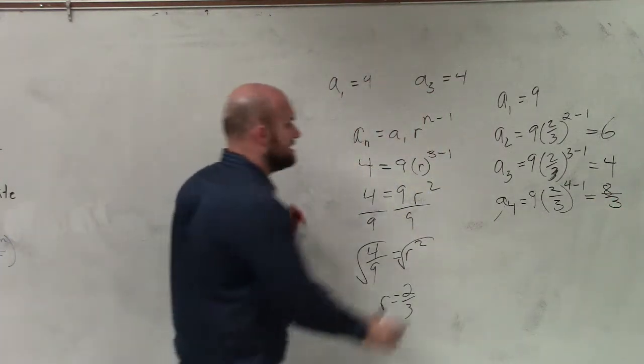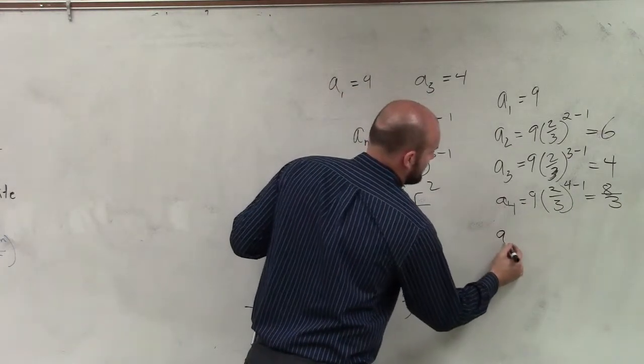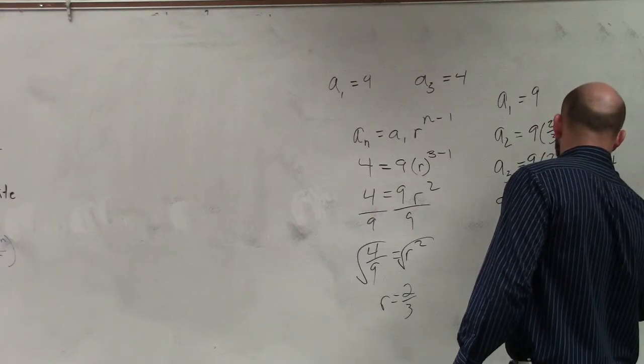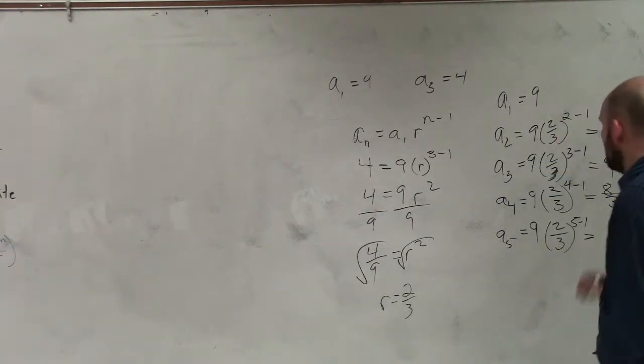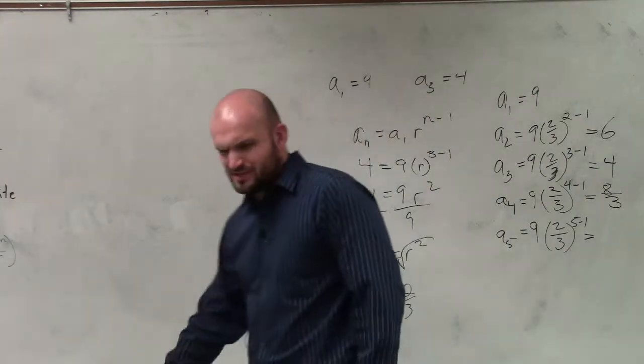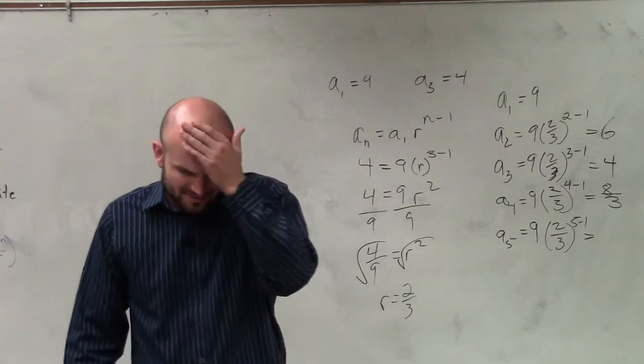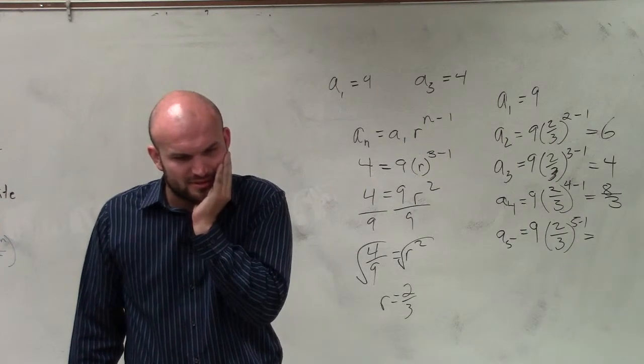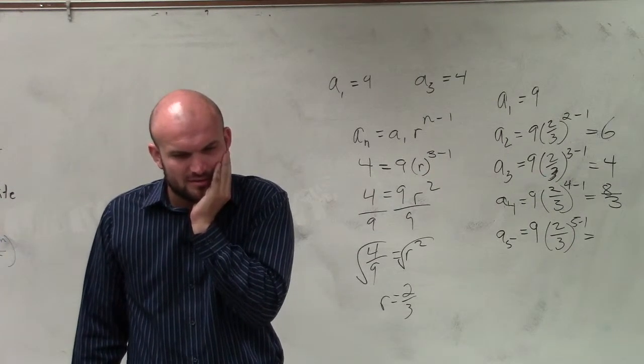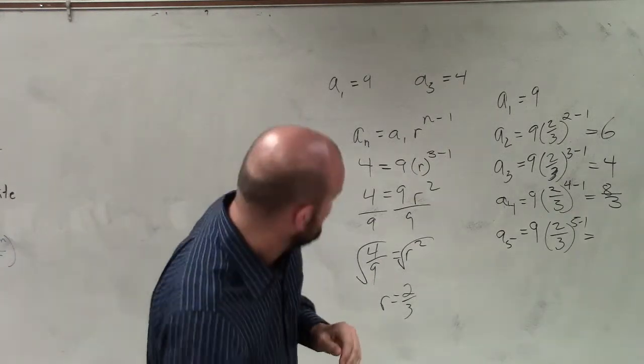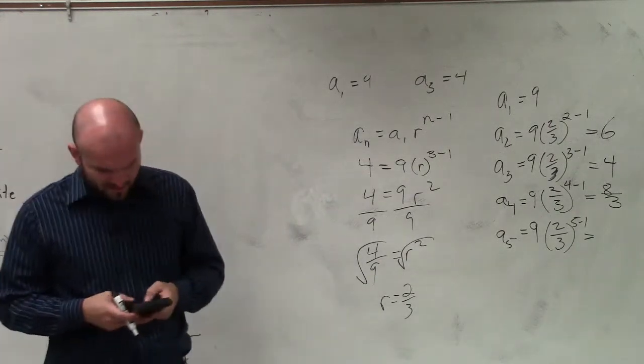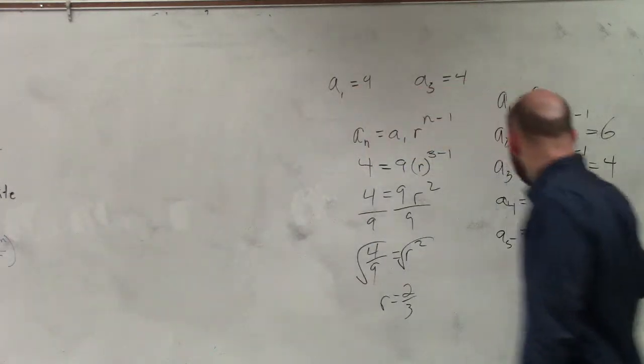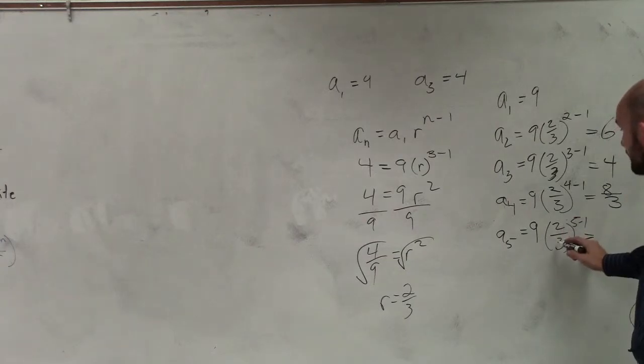OK, now let's do the last one, a sub 5. 9 times 2 over 3 raised to 5 minus 1. So that's going to be raised to the 4th power. What is 3 to the 4th power again? I should know it. Oh, 2 to the 4th power is 16, and 3 to the 4th power is 81.